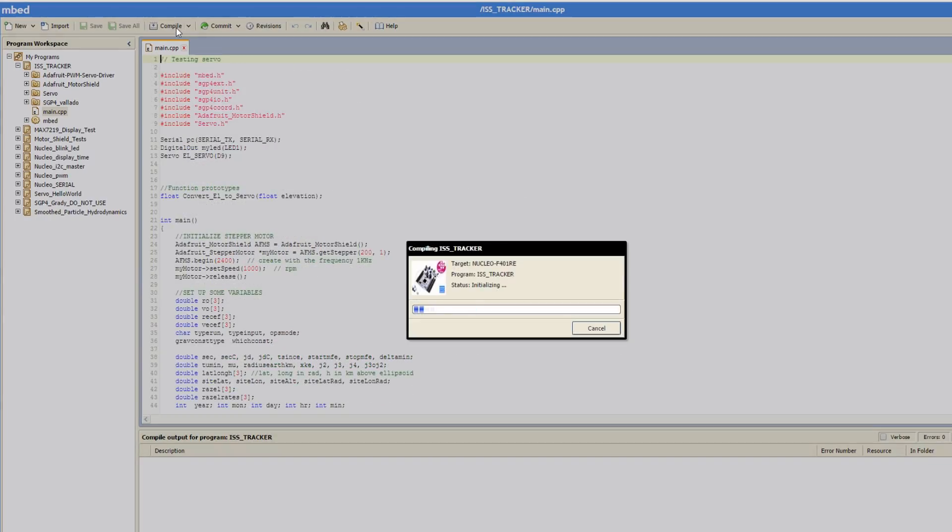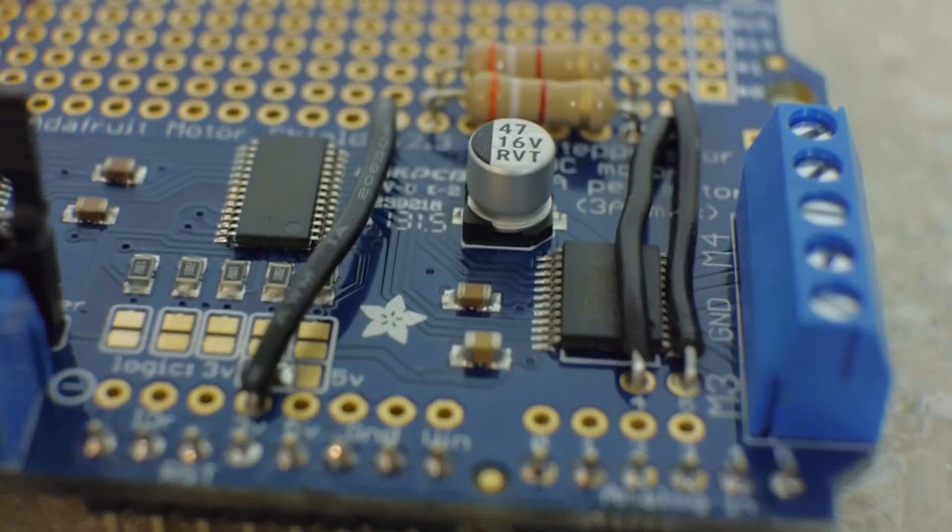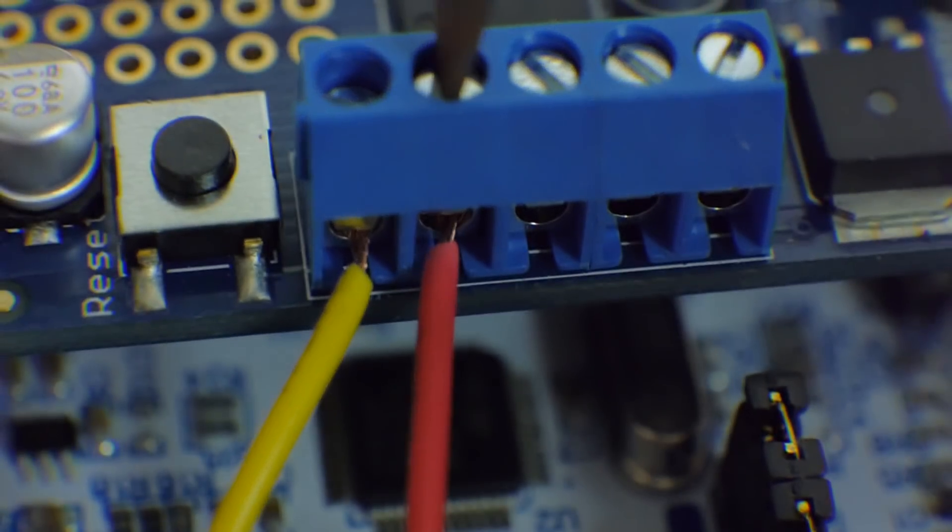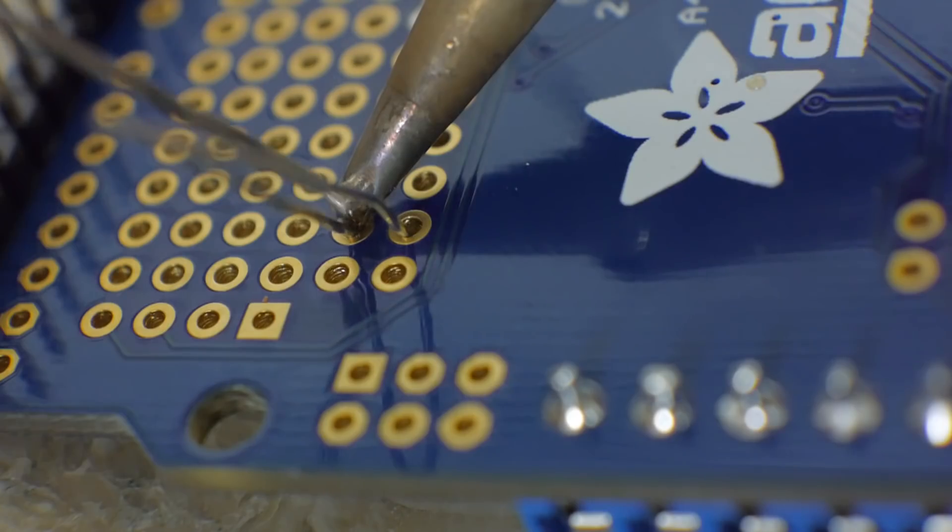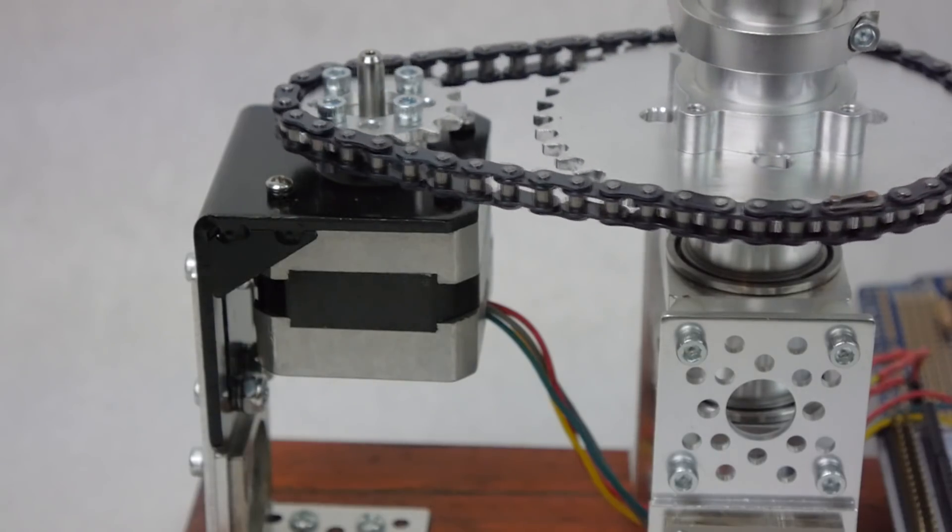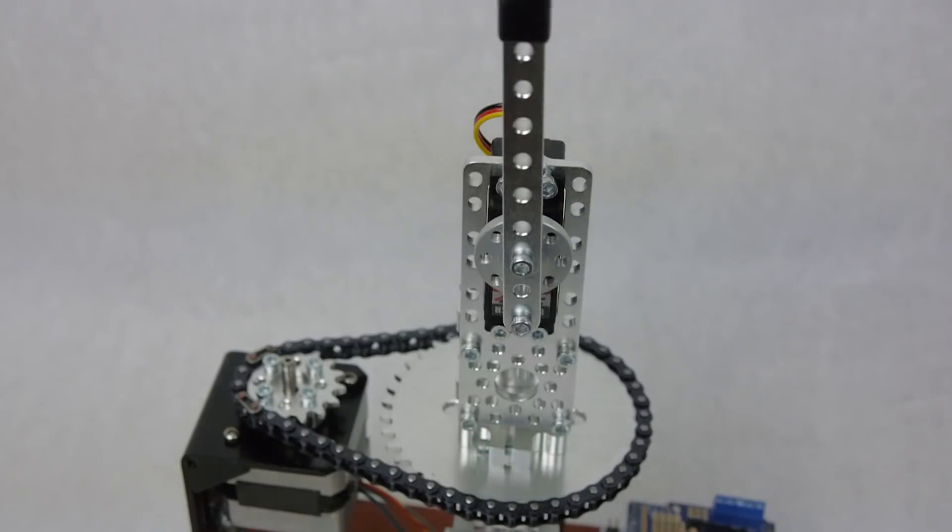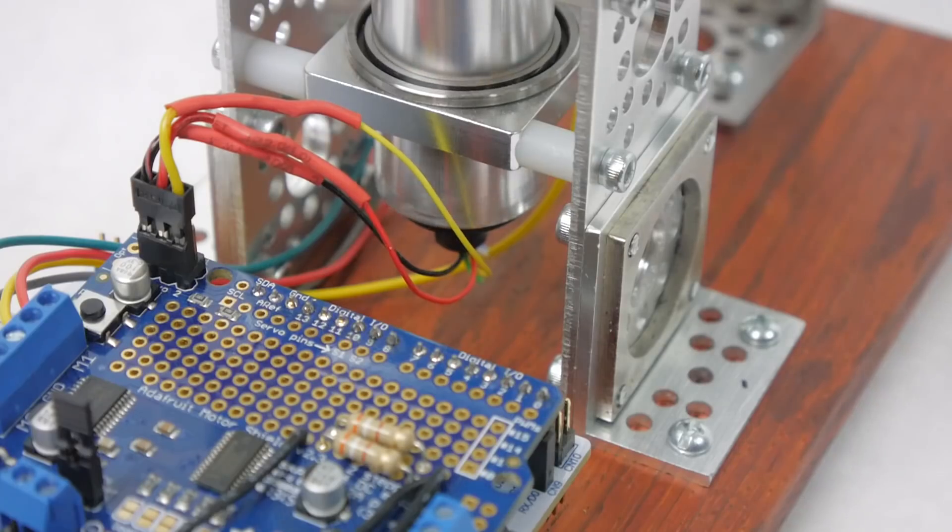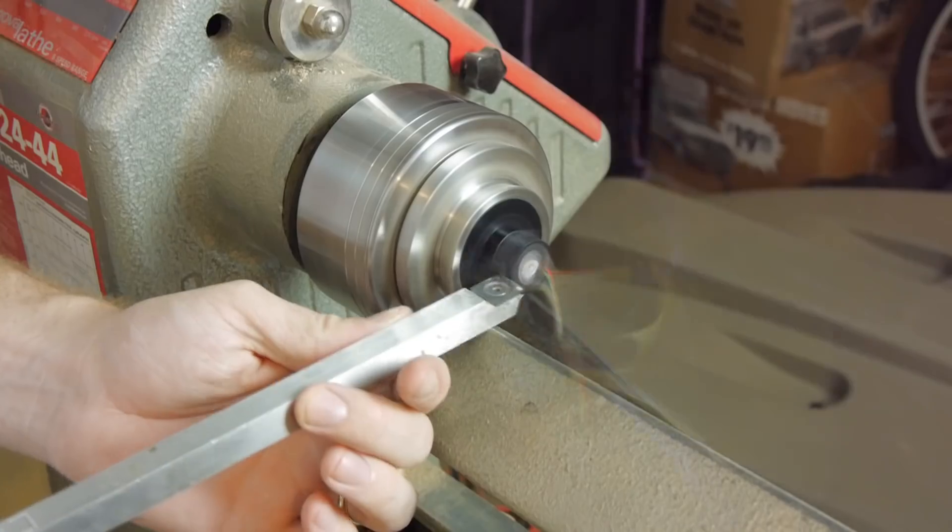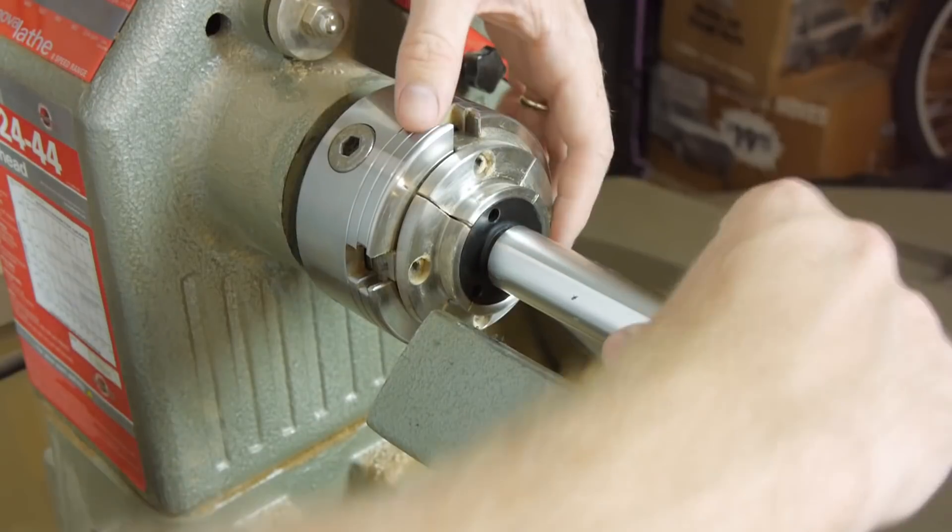I have an Adafruit motor shield on top of the Nucleo. I had to port the library for this to work on the microcontroller as well, which turned out to be a bigger challenge for me. This shield drives both the stepper motor, which controls azimuth, and the servo, which controls elevation. The servo is connected to the slip ring to allow full rotation without getting any wires tangled. I had to make a few warranty-voiding adjustments on the wood lathe to get it to fit.